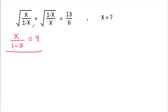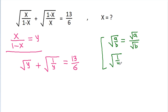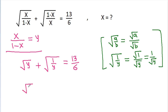Then this will be the square root of y plus the square root of (1 minus x) over x, which is 1 over y, equal to 13 by 6. Since the square root of (1/y) equals 1 over the square root of y, it becomes: square root of y plus 1 over square root of y is equal to 13 by 6.